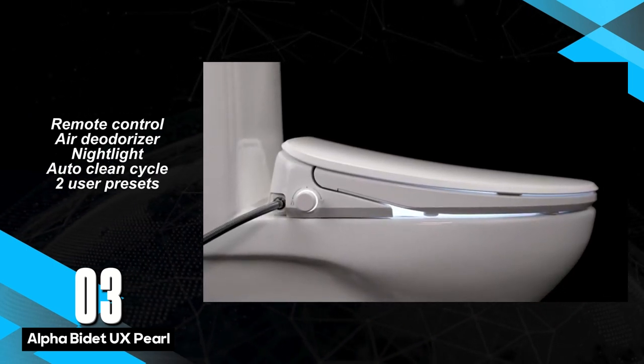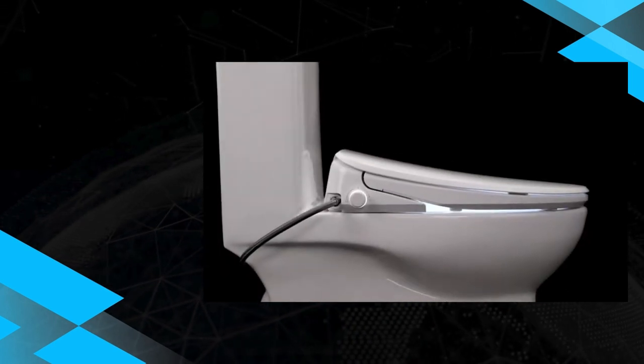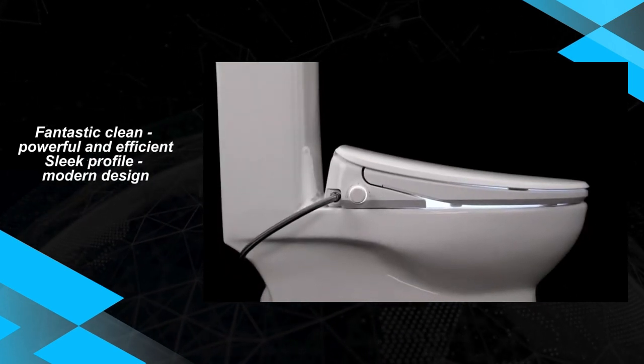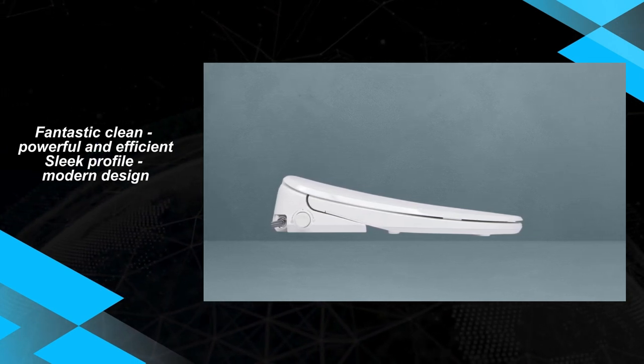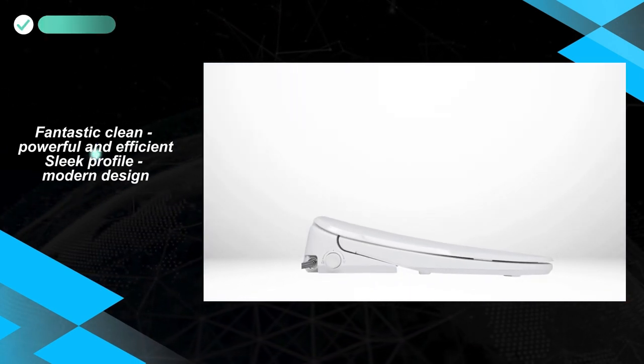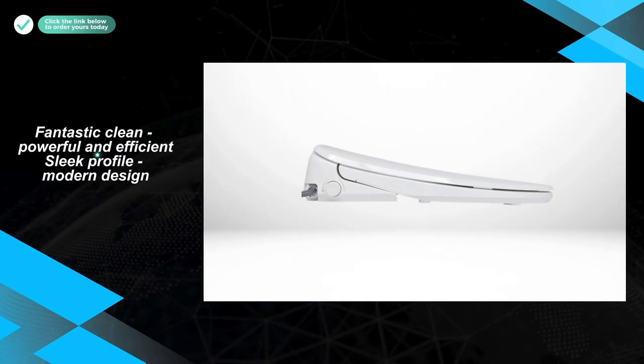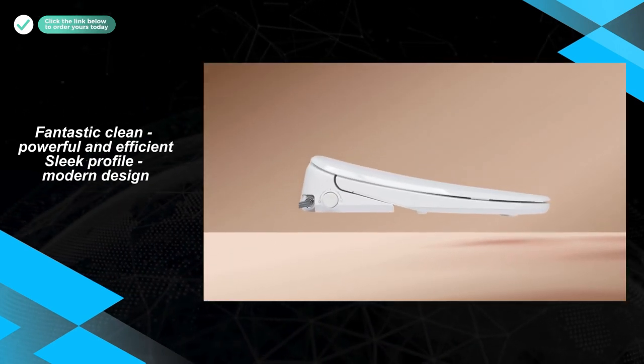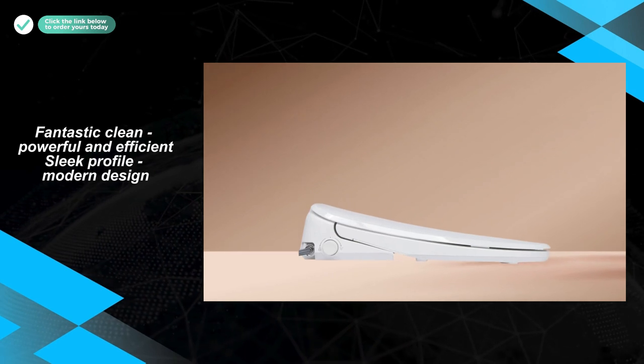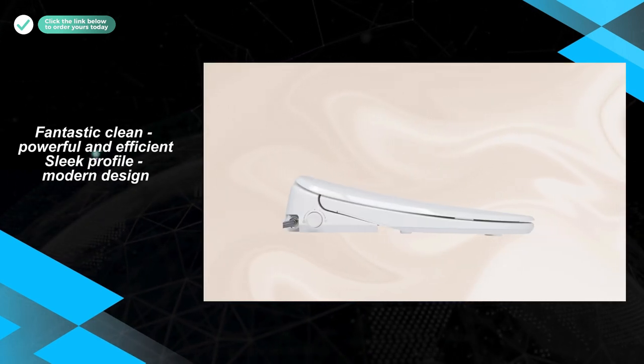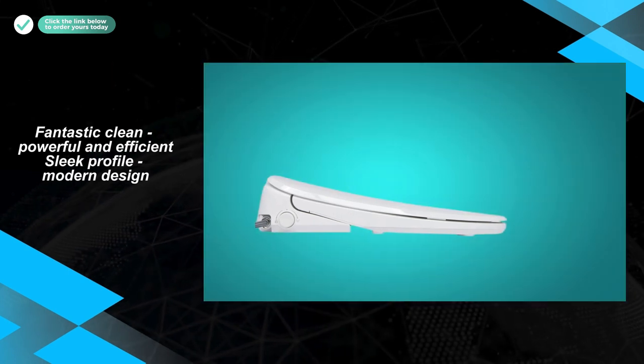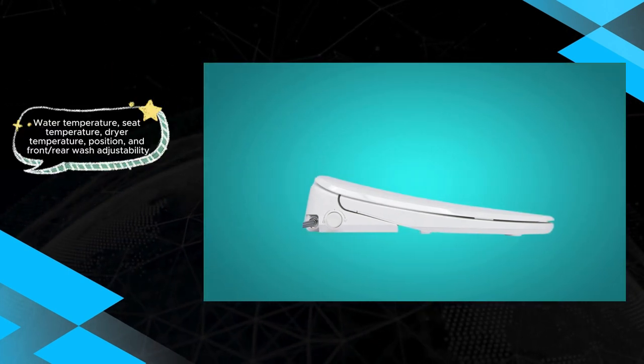Boasting adjustable settings for water temperature, seat temperature, dryer temperature, and nozzle position, the UX Pearl ensures personalized comfort during use. Its front and rear wash options, warm water, heated air, and heated seat add to the overall luxurious experience. Additionally, features like remote control, air deodorizer, nightlight, and auto-clean cycle enhance user convenience.